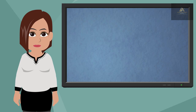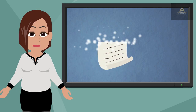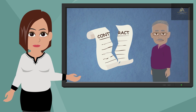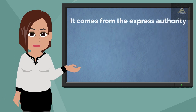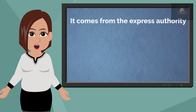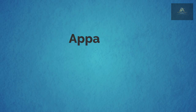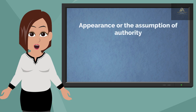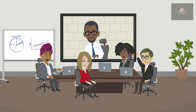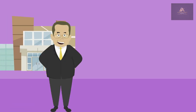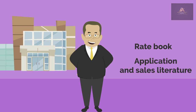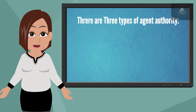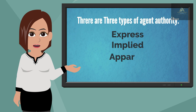Implied authority is authority not expressed or written into the agent contract, but which the agent is assumed to have in order to transact the business of insurance for the principal. It comes from the express authority, since not every single detail of an agent's authority can be spelled out in the written contract. Apparent authority is the appearance or assumption of authority based on the actions or words of the principal. For example, when an insurance company furnishes an agent with a rate book, applications, and sales literature, the insurance company cannot later deny that a relationship existed. To review, the three kinds of agent authority are express, implied, and apparent.